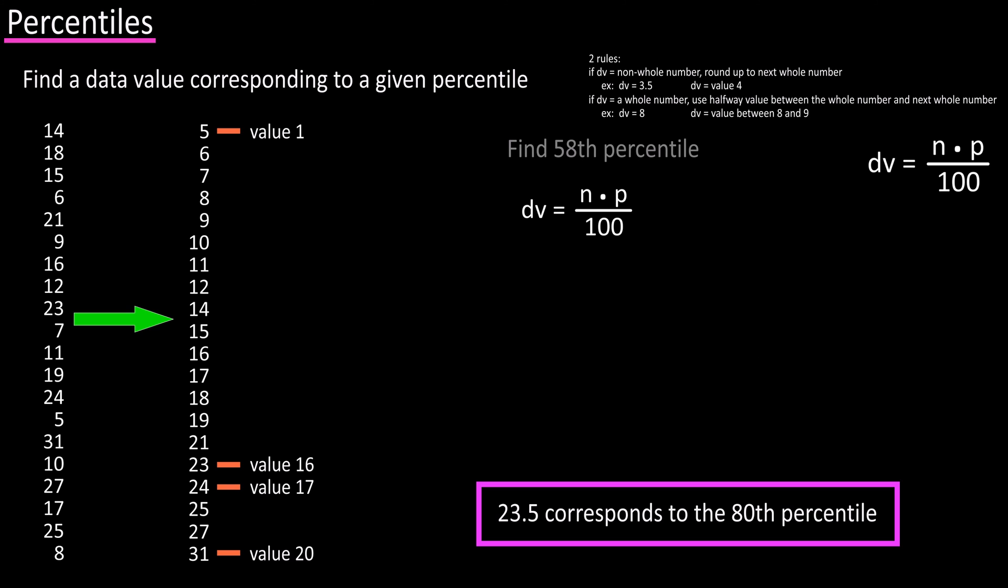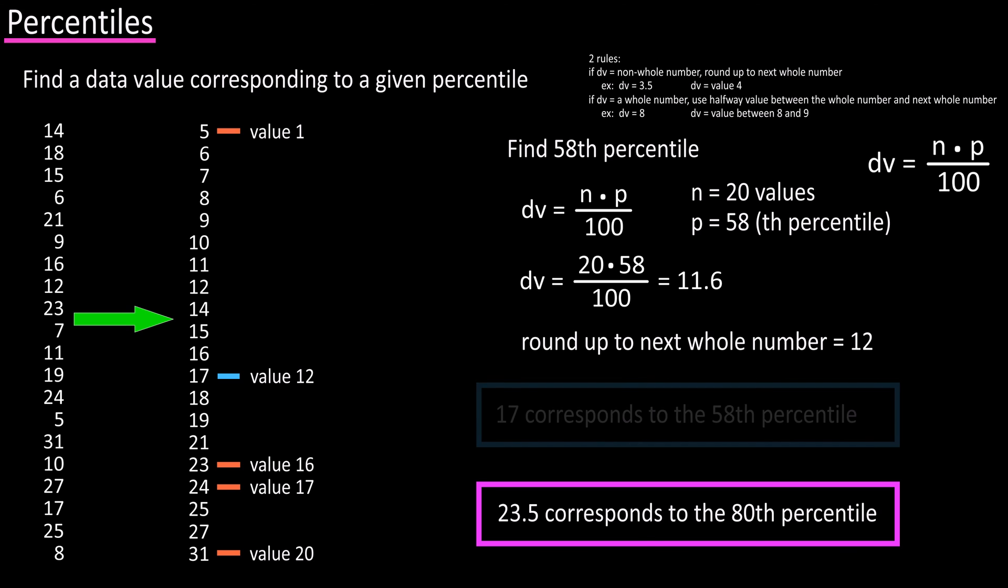Now, let's say we wanted to find the 58th percentile. Using our equation, we have 20 times 58 divided by 100, which equals 11.6. So, in this case, we round up to 12. So, we find the 12th value in the data set, which is 17. So, 17 corresponds to the 58th percentile.